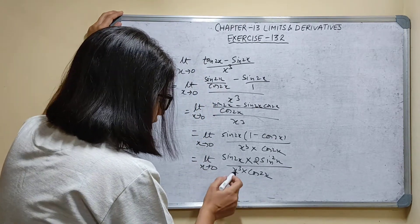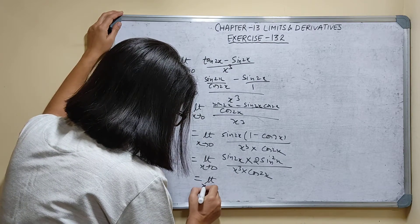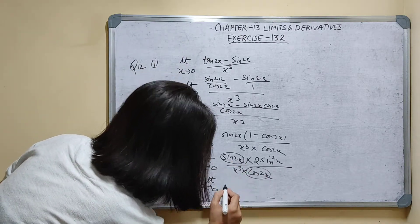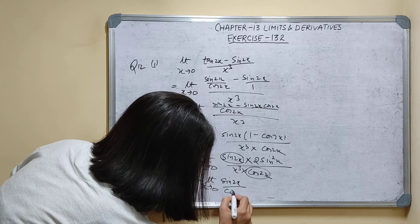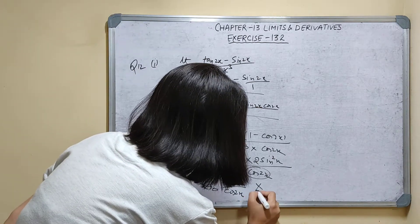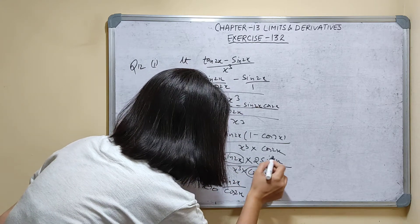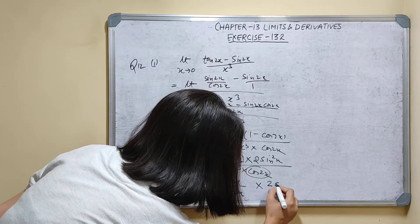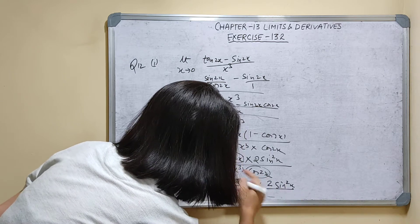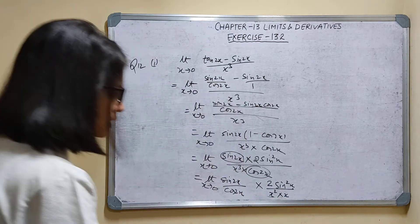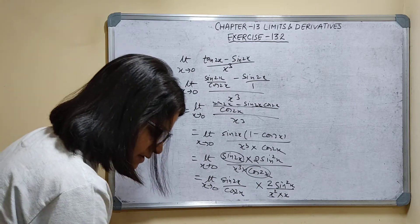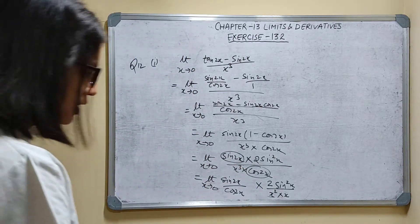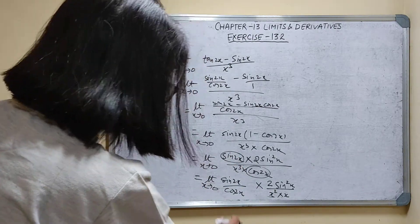Rewriting sin x upon cos x as tan x (i.e., sin 2x upon cos 2x), and splitting 2 sin squared x upon x cube as 2 sin squared x upon x squared into x. So we have sin 2x upon cos 2x into 2 sin squared x upon x squared into x, where sin squared x upon x squared is written as (sin x upon x) whole squared.